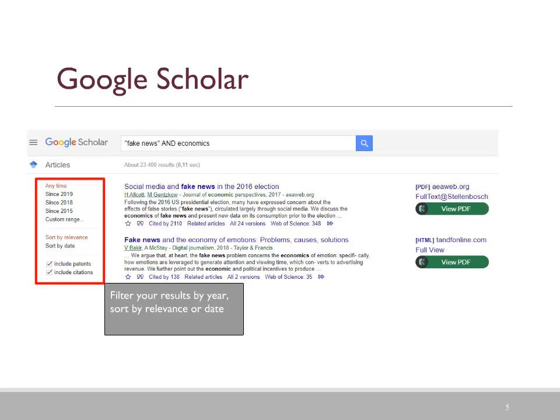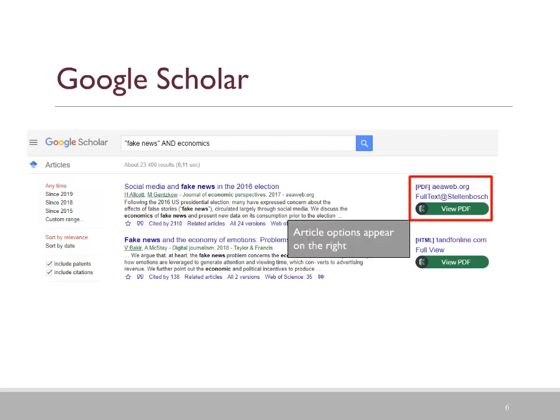On the left-hand side, you can filter the results even further by year, relevance, or date. On the right-hand side, you can see the article options that appear, such as viewing the article in PDF.